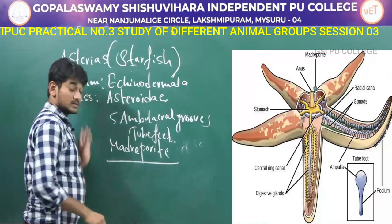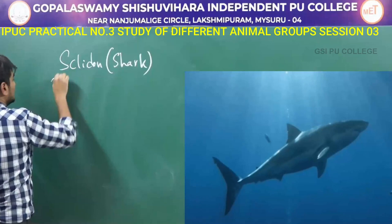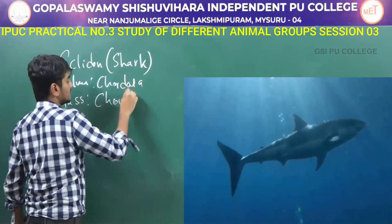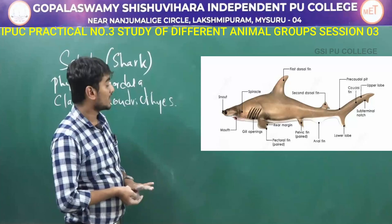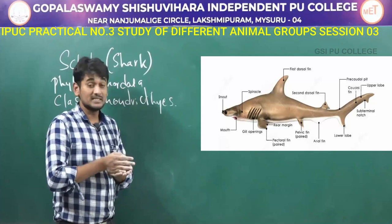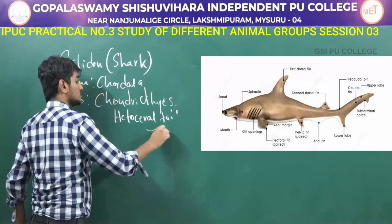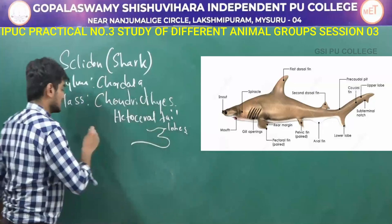The next one is Scoliodon, commonly called as shark. It comes under the phylum Chordata and class Chondrichthyes. In the right side we can observe the picture of shark. It shows a streamlined body with a dorsiventrally flattened body. The anterior and posterior regions are laterally compressed. There is presence of an elongated heterocercal tail, which means the fin shows two asymmetrical lobes. The body shows placoid scales.